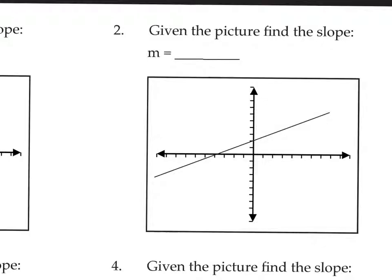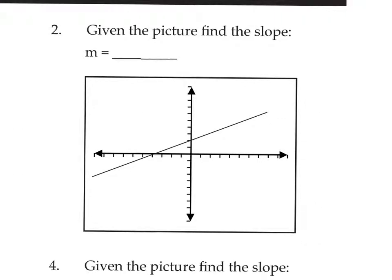On number two, our line is going uphill. So if this is your bank account, it makes you happy — this is a positive slope. I'm going to write a plus sign just so I remember I already thought about it. You can use the intercepts here; the line is crossing at positive two and at negative four, so we're going to make a triangle between these two points.